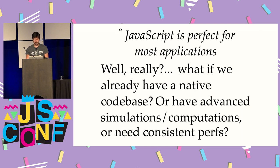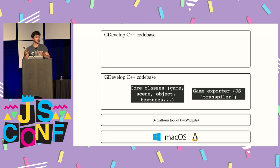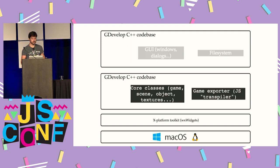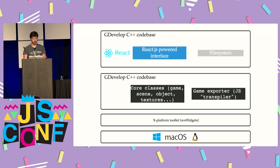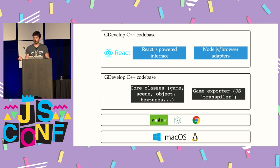Let's take a look at the code base of GDevelop. There is the core of the software — C++ classes defining what a game is, what an object is, how an event is composed of conditions and actions, and all the tools for transpiling events to JavaScript so you get a running game. On top of this there was the interface done in C++ using a toolkit called wxWidgets, and there was interaction with the file system. My first idea was to replace the interface with React, write adapters for the file system, and run everything on Node.js, Chrome, or in Electron so we can package the whole thing as an application.